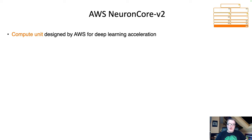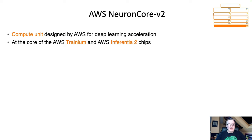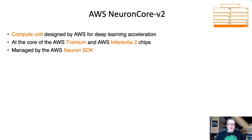The Neuron Core V2 is hardware designed by AWS — it's a compute unit designed for one thing: to accelerate deep learning workloads. The Neuron Core is at the core of both chips, Trainium and Inferentia 2. So both accelerators are based on Neuron Core V2. You need a software development kit to work with the Neuron Core, and this is called the Neuron SDK.